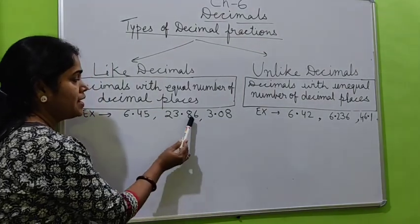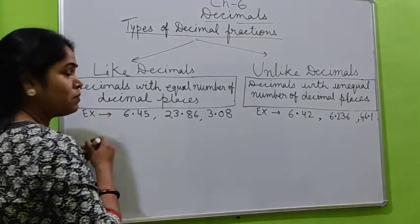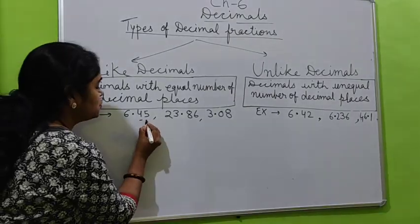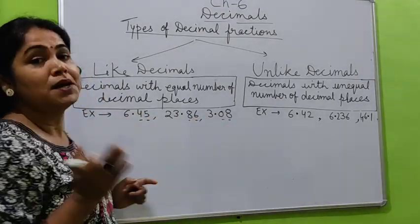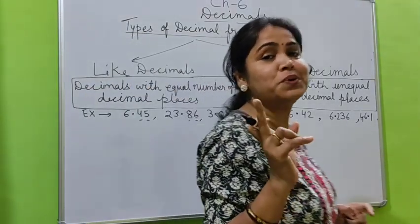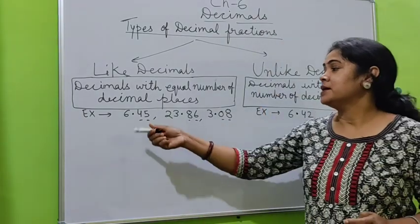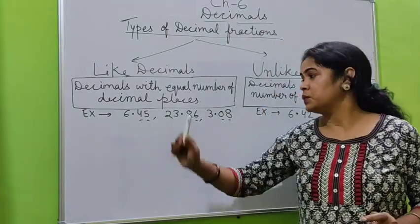4, 5, 8, 6, 0, 8. How many places I have used? Two places. Here also two places. Don't check the whole part. Take care. Don't check the whole part. Check the decimal part only.